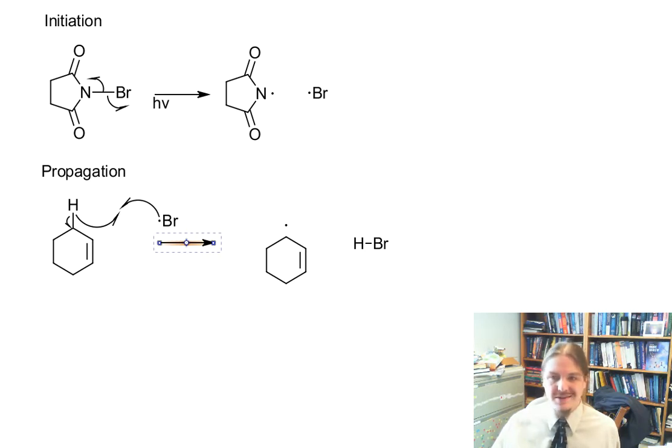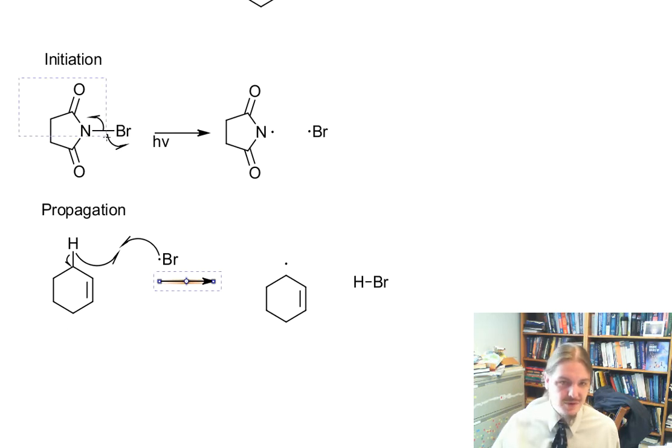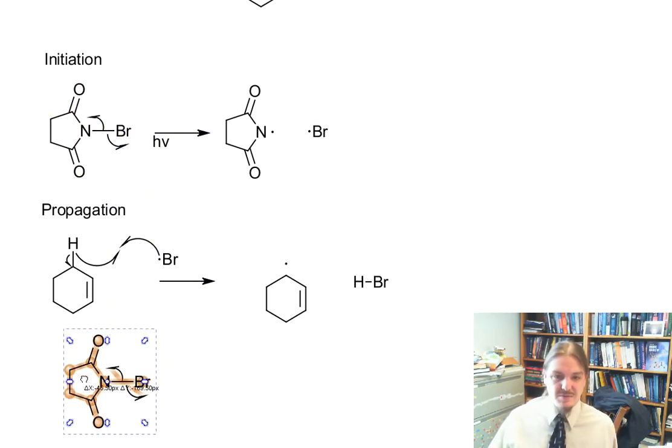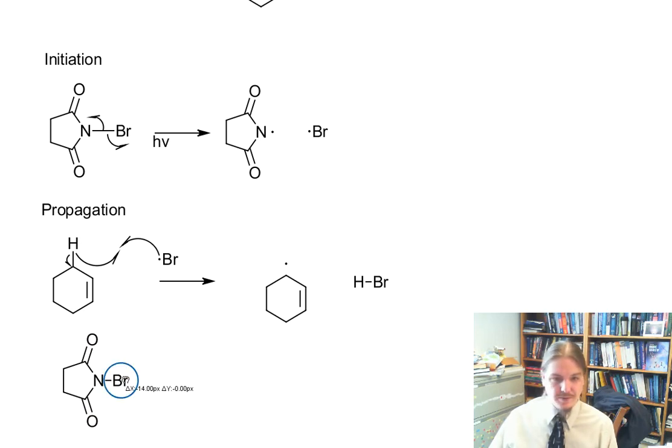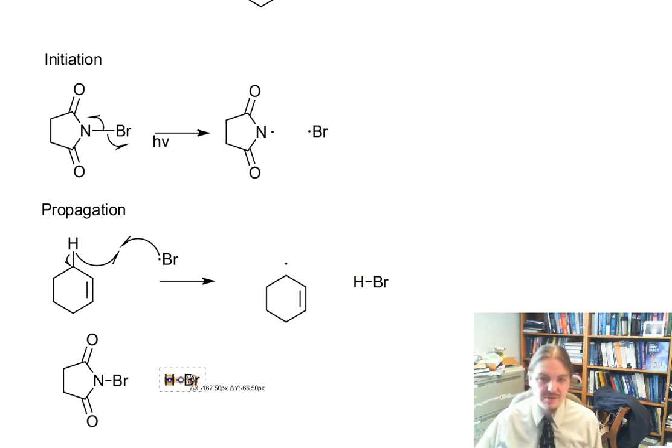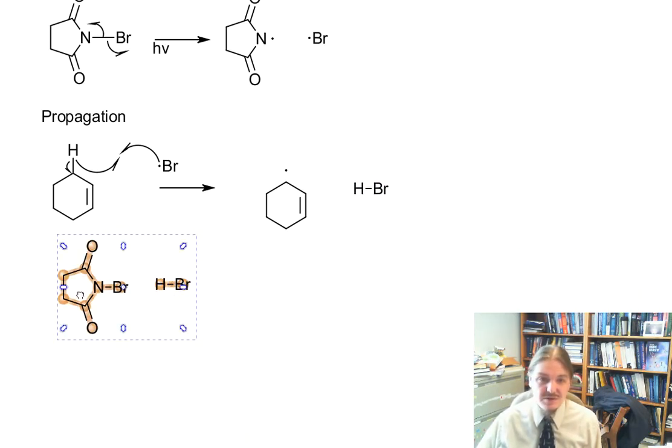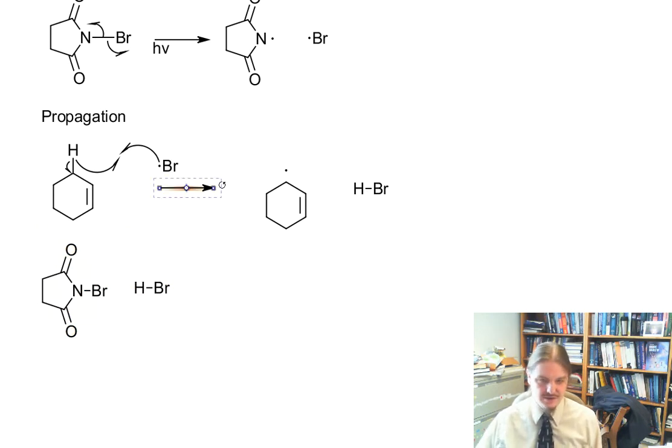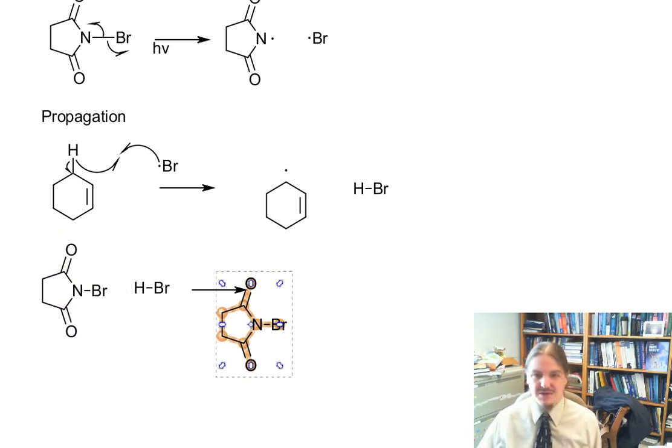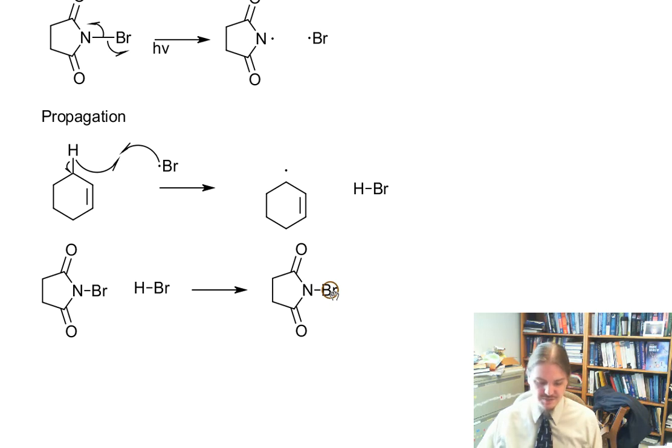So the next propagation step actually involves a non-radical reaction of N-bromosuccinimide and hydrogen bromide. And this actually has a couple of steps to it, a proton transfer and a nucleophilic attack, or at least that's what is hypothesized. I'm not going to show that because it's not 100%. I'm personally not 100% clear on the mechanism of this exchange, but the exchange that occurs is a hydrogen for a bromine, but not by a radical pathway. This is some kind of ionic mechanism.